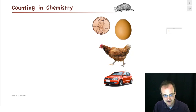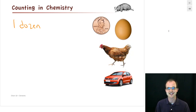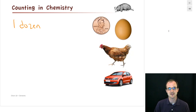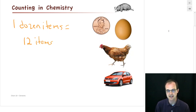Let's say we are talking about the phrase 'one dozen.' Most of you are very familiar with that phrase. If I say I've got a dozen pennies, that's 12 pennies. A dozen eggs? 12. A dozen chickens, 12 chickens. A dozen cars, 12 cars. It doesn't really matter what we're talking about — one dozen items is the same thing as 12 items.